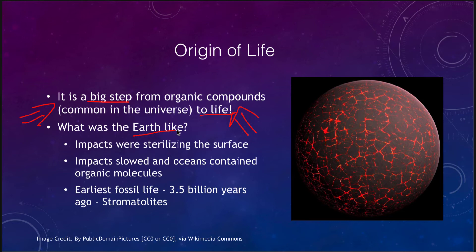Life is something that we don't know of other than here on earth. At the time life might have begun, the early earth looked very hot and molten, constantly being impacted, and that was sterilizing the surface so life was unable to form very early on. However, over that first few hundred million years the impacts slowed, the oceans began to form, and in the oceans we would find organic molecules much as we saw with the Miller-Urey experiment.